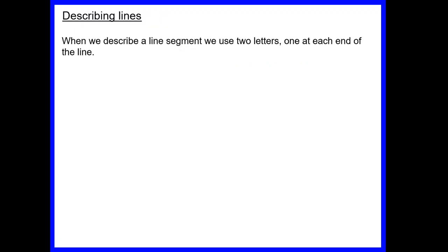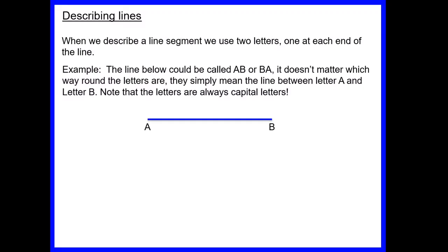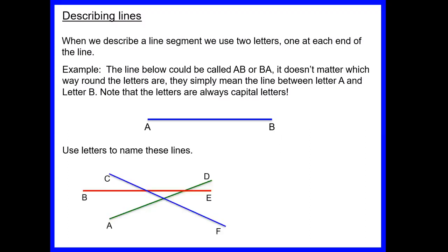We're going to start off with describing lines. When we describe a line segment we use two letters, one at each end of the line. So for the line below, one end is called A and the other end is labeled B, so we could call that line AB or BA — it doesn't matter which way round those letters are. We usually use capital letters to denote the ends of lines. Pause the video now and have a go at naming the three colored lines below.